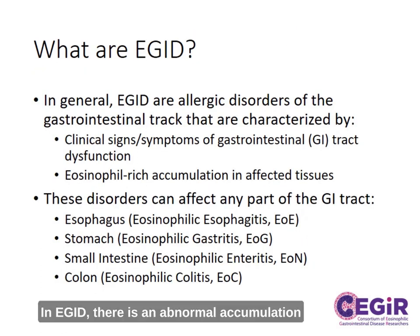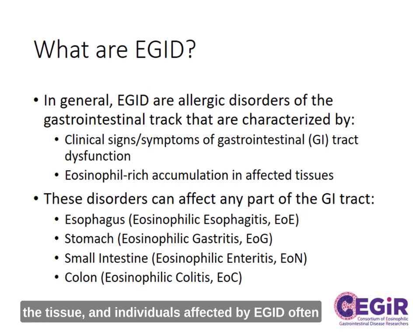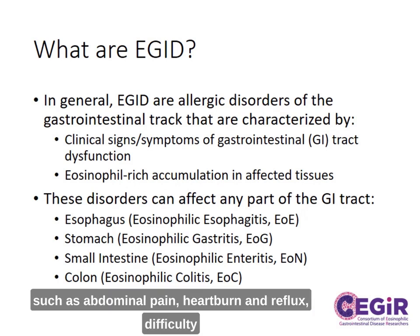In EGID, there is an abnormal accumulation of eosinophils in the gastrointestinal tissue. Accumulation of eosinophils can lead to dysfunction of the tissue, and individuals affected by EGID often have clinical signs and symptoms of this dysfunction, such as abdominal pain, heartburn and reflux, difficulty swallowing, impaction of food, or many other symptoms.